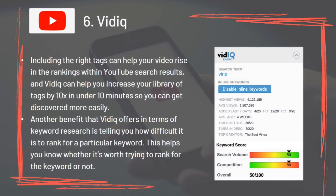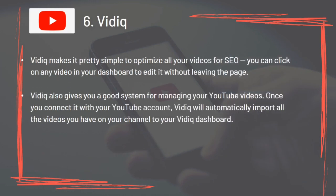Tool 6: VIDIC. Including the right tags can help your video rise in YouTube search rankings, and VIDIC can help you increase your library of tags by 10 times in under 10 minutes. VIDIC also tells you how difficult it is to rank for a particular keyword, helping you decide whether it's worth pursuing. It simplifies SEO optimization — you can click on any video in your dashboard to edit it without leaving the page. Once connected with your YouTube account, VIDIC automatically imports all your channel's videos to your VIDIC dashboard.